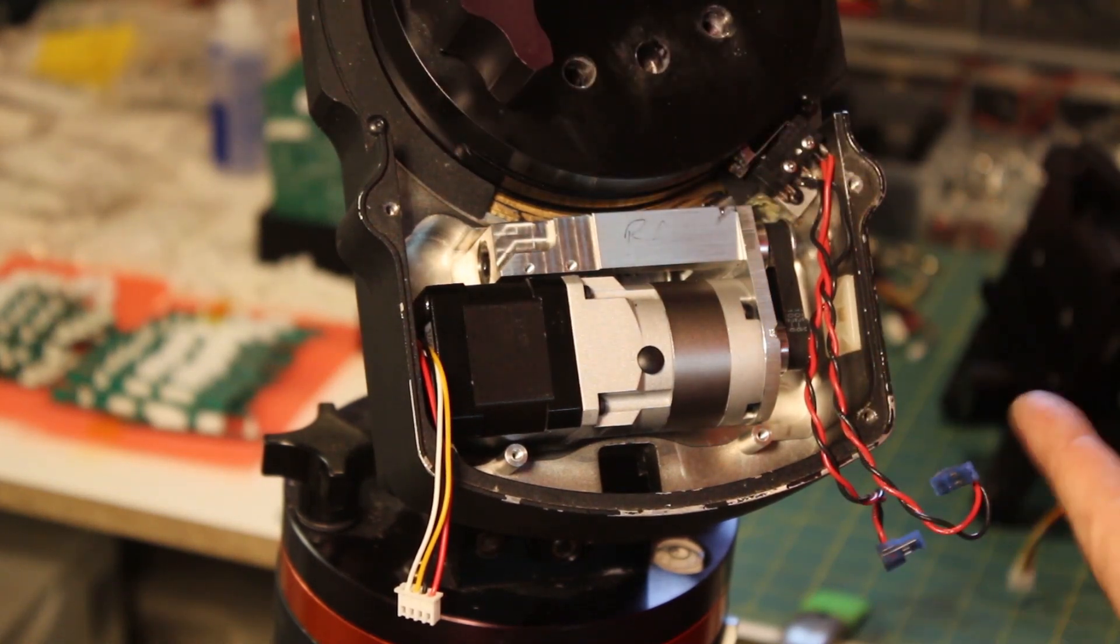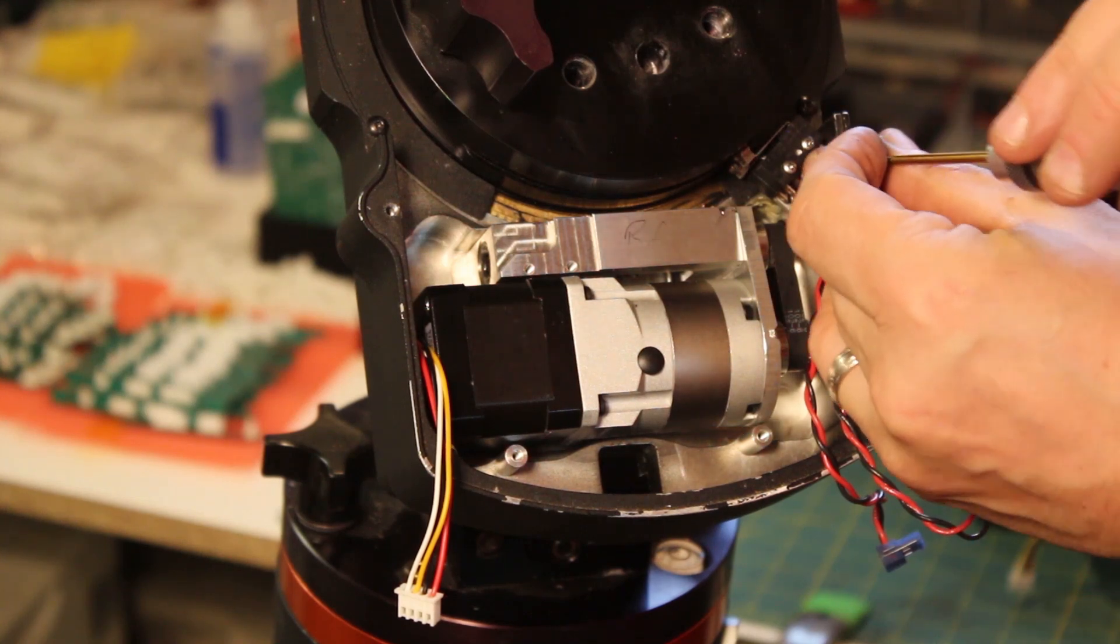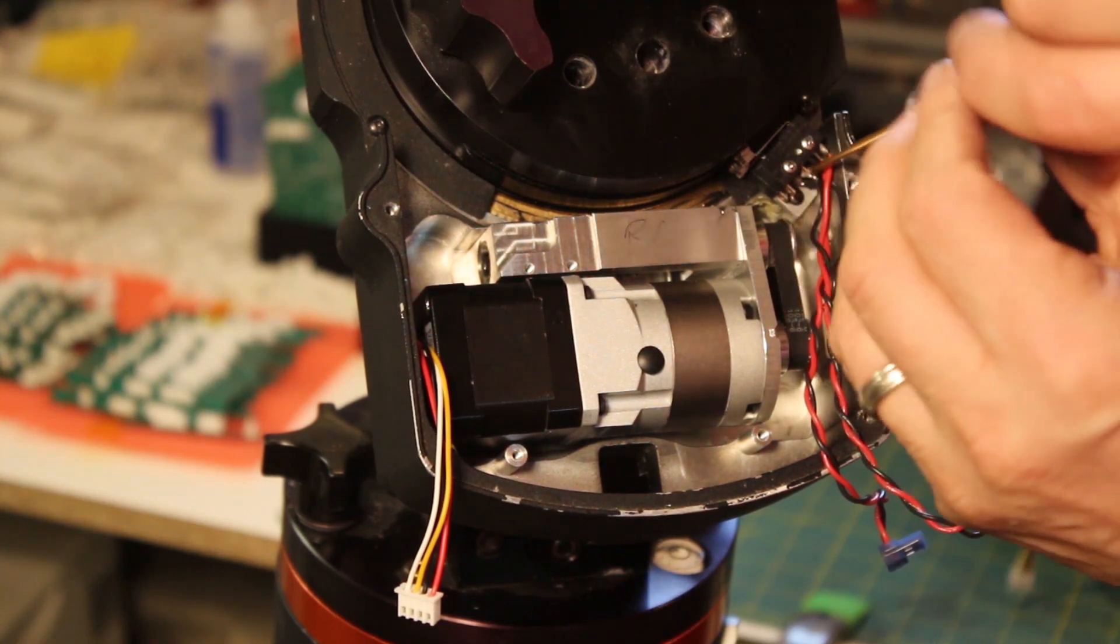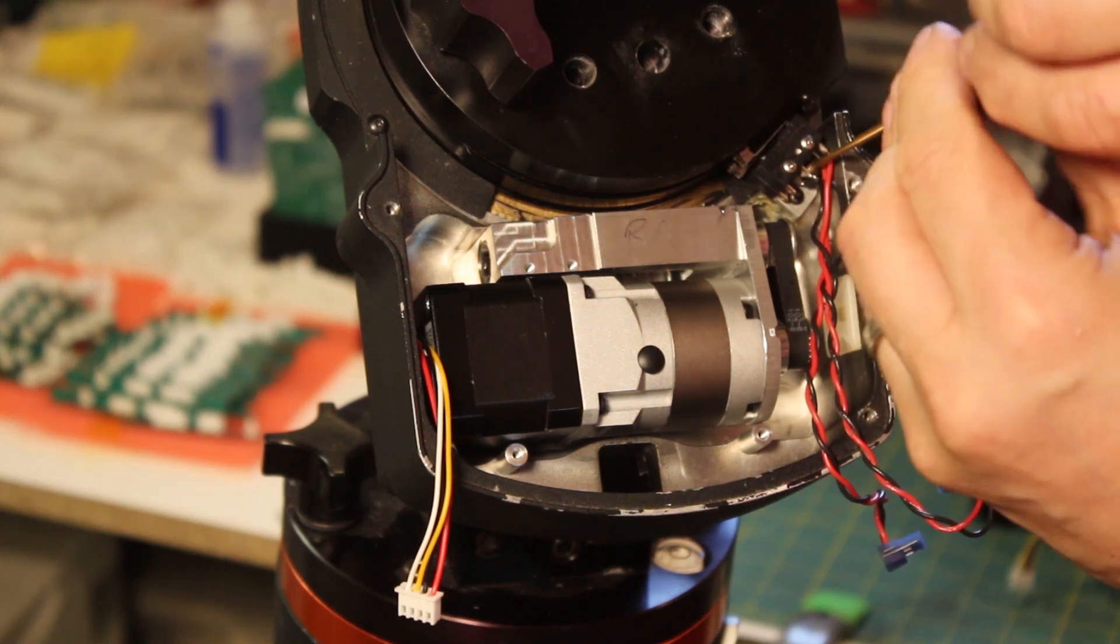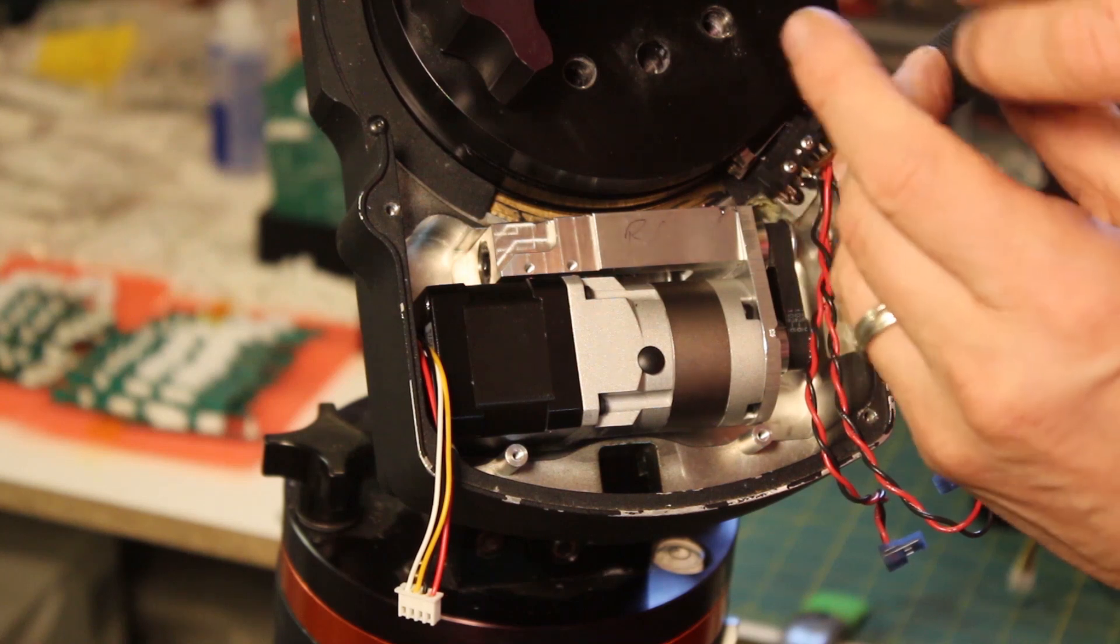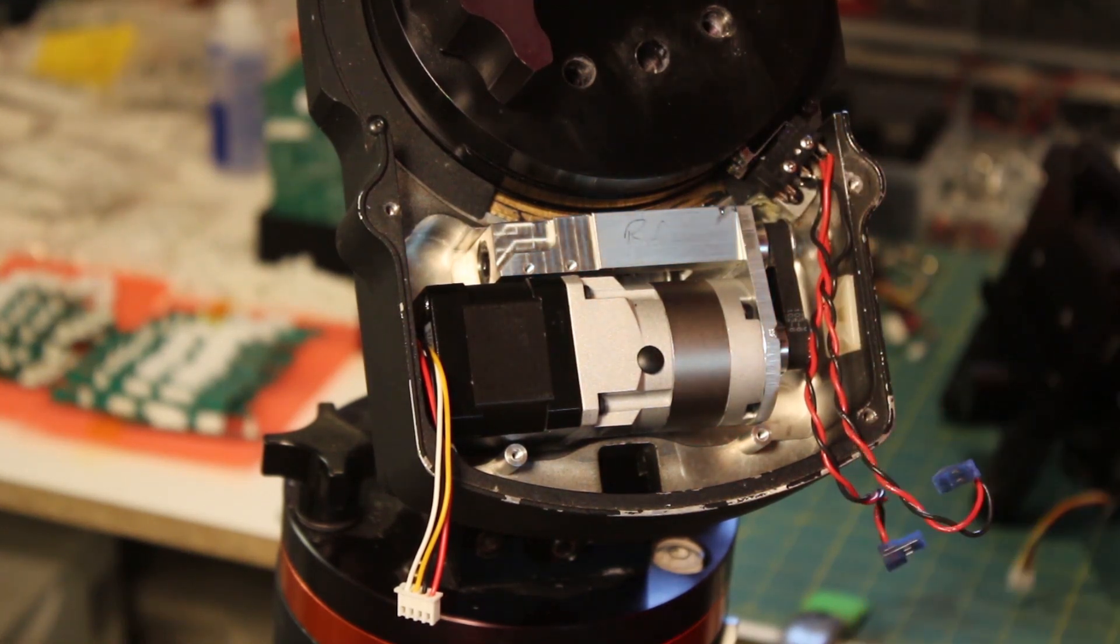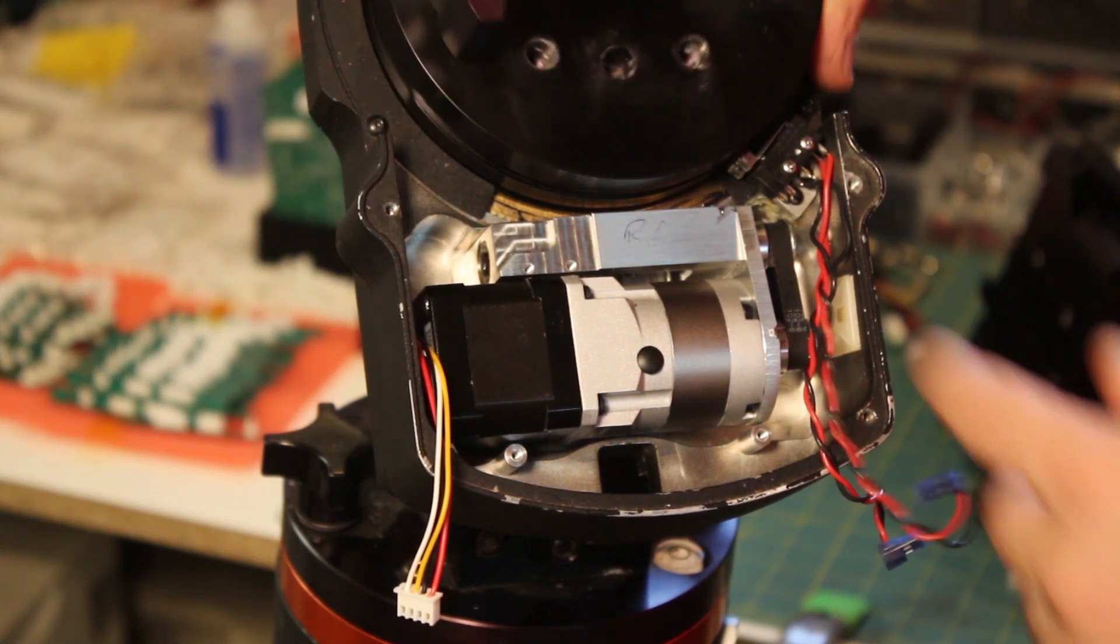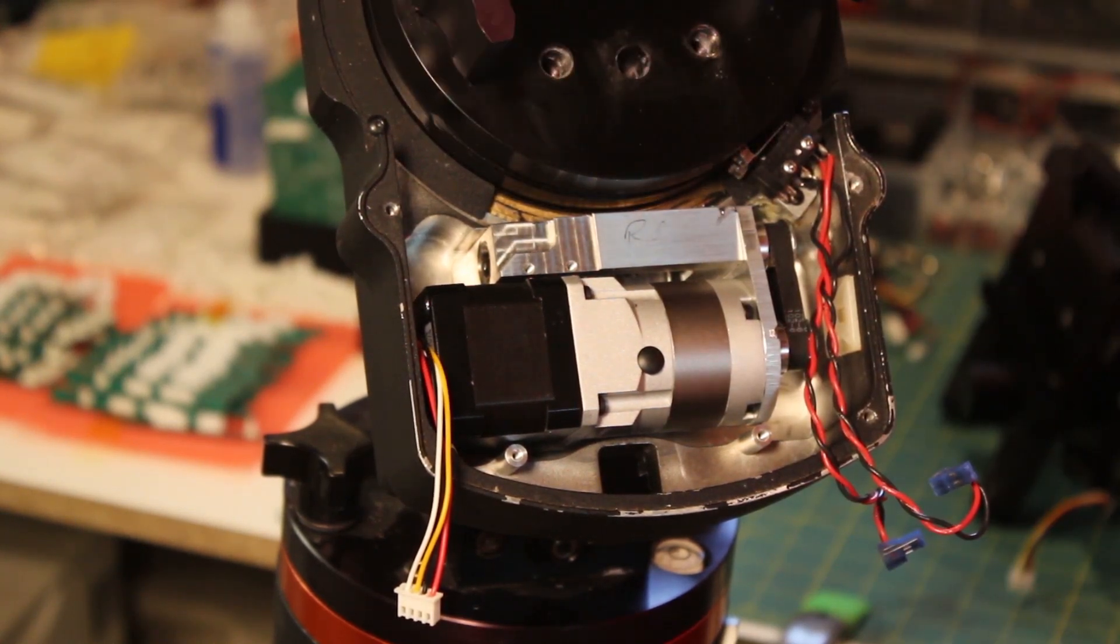All right, so let's get the other bolts in here. Again, make sure you don't cross thread it. Working in aluminum can be a little fragile. We still got our click on home, we got our click on limit.